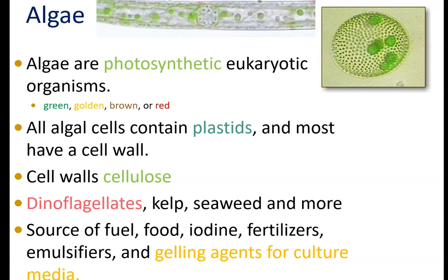There are some algae that have something called silica as their cell wall, which makes them clear like glass — which is what glass is made out of. Dinoflagellates are a type of algal cell that can have flagella and can be motile in waterways.